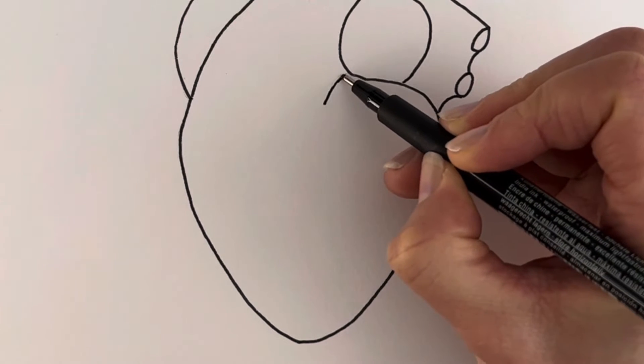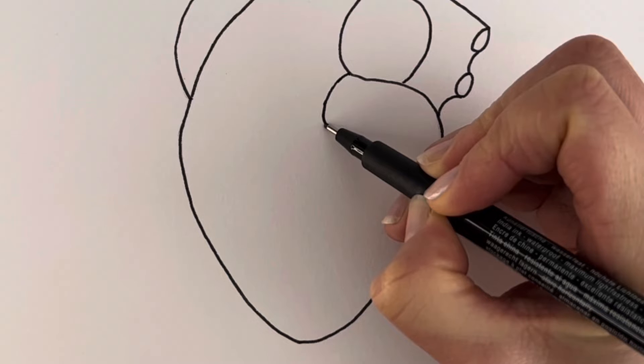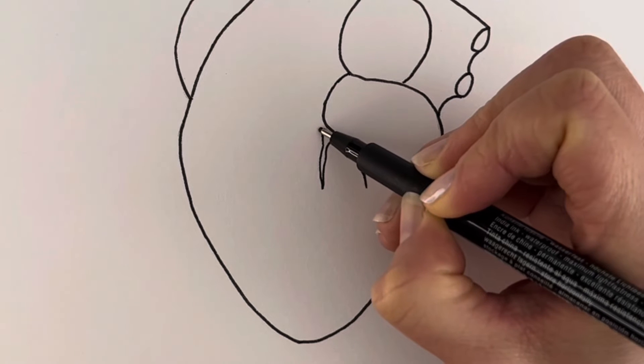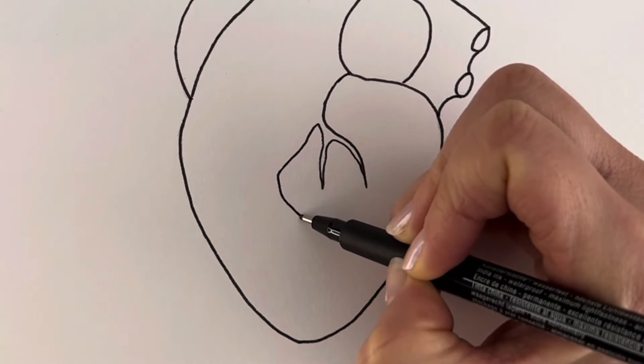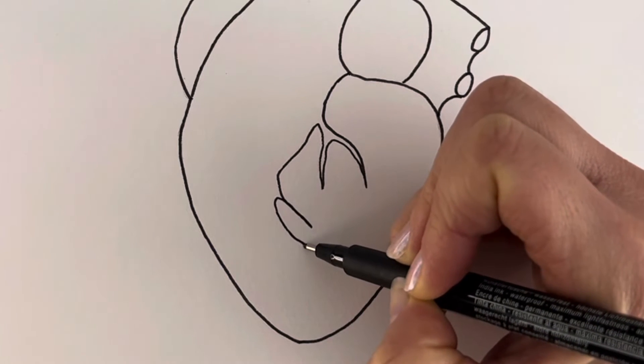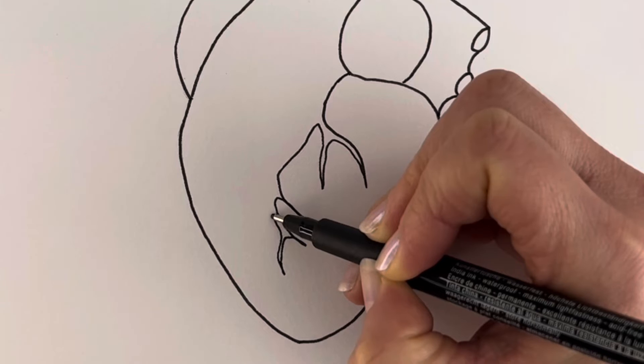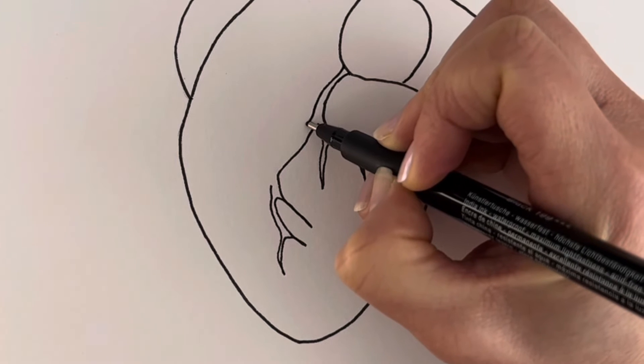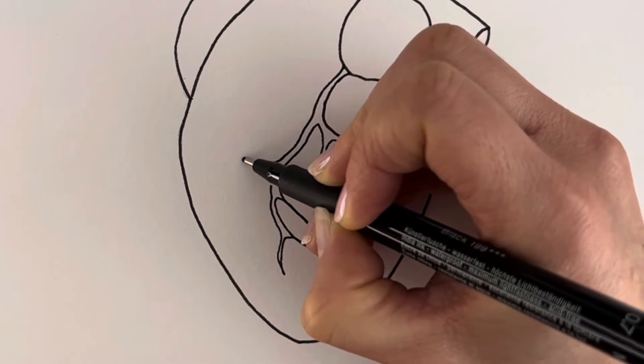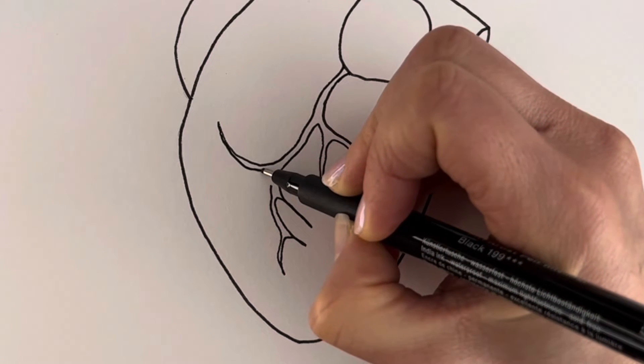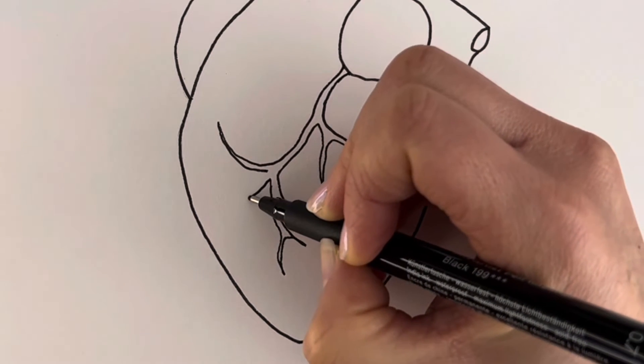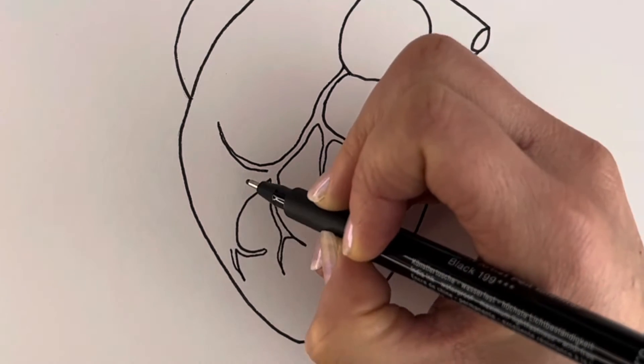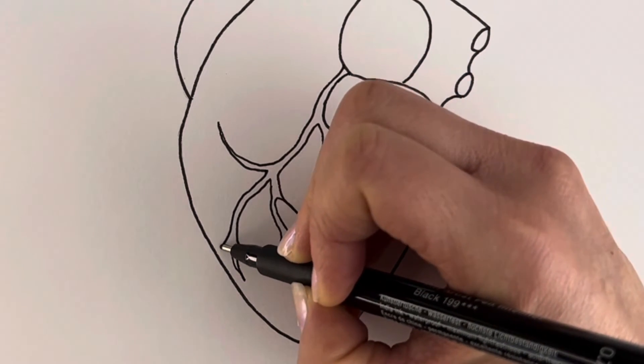So let's draw this artery coming down here, the left coronary artery. Looks like lots of little branches. So imagine you're drawing a tree, an upside down tree. I'm not going to go into too much detail but just make it look realistic. Brilliant. So it goes all the way down.